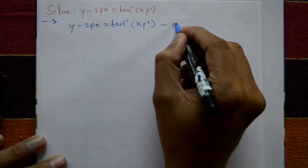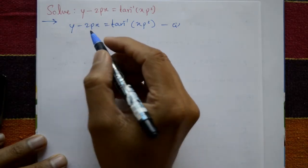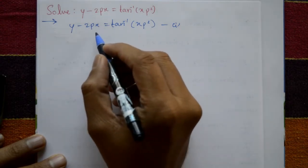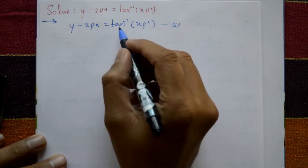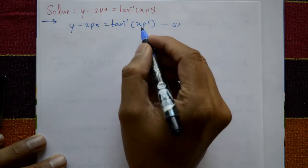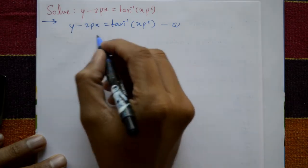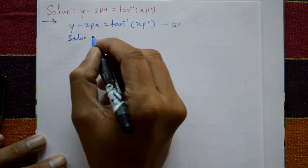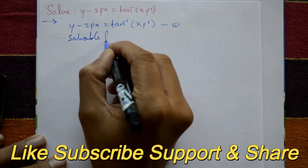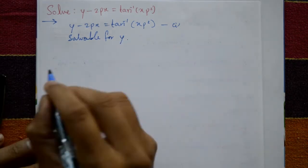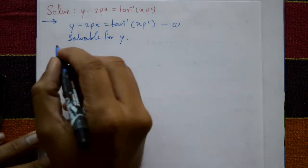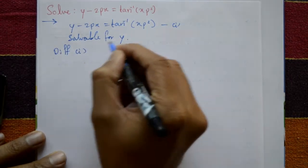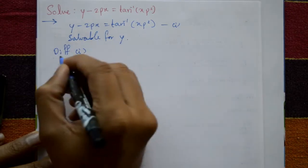Given equation is y minus 2px equals tan inverse of xp squared — this is equation number one. We check whether the given equation is possible to express as p equals, y equals, or x equals. It is not possible to solve for x or p directly. This expression is solvable for y only.